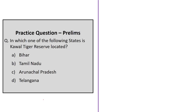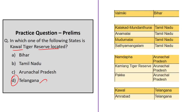The question asks in which state Kavval Tiger Reserve is located. The answer is option D: Telangana. Some other important tiger reserves by state: Valmiki Tiger Reserve in Bihar; Kalakad Mundanthurai, Anamalai, Mudumalai, and Sathyamangalam Tiger Reserves in Tamil Nadu; Namdapha, Kamlang, and Pakke Tiger Reserves in Arunachal Pradesh; and Amrabad Tiger Reserve also in Telangana.